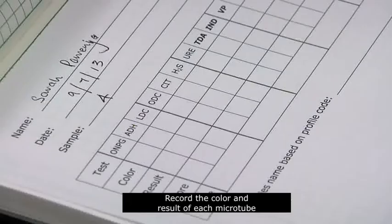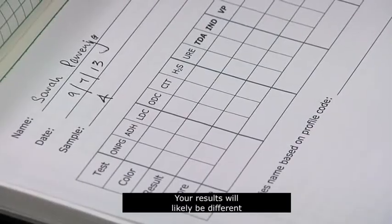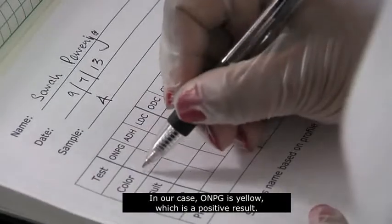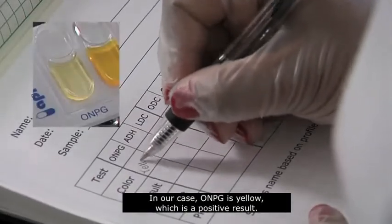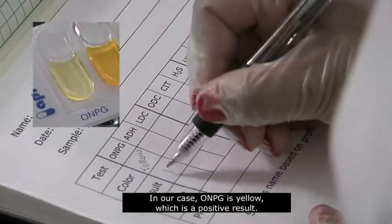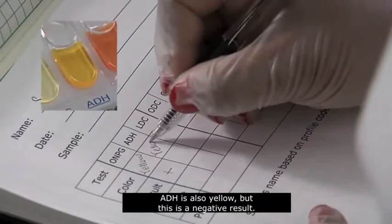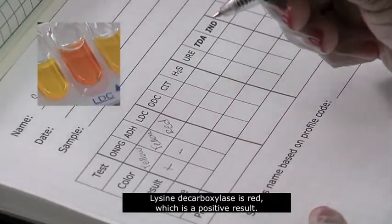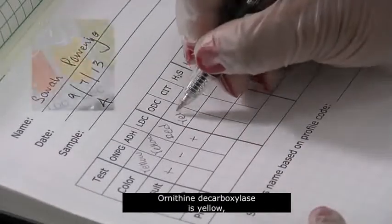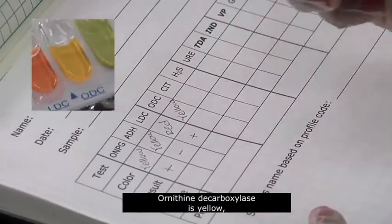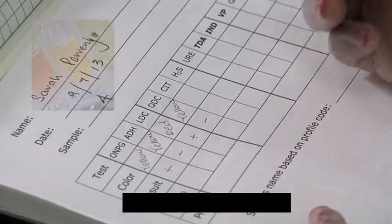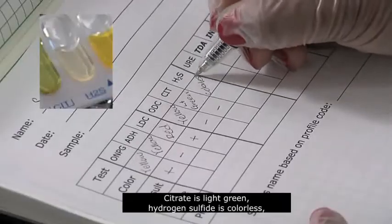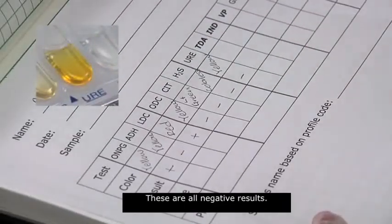Record the color and result of each microtube in your results table. Your results will likely be different from the specific results we show here. In our case, ONPG is yellow, which is a positive result. ADH is also yellow, but this is a negative result. Lysine decarboxylase is red, which is a positive result. Ornithine decarboxylase is yellow, which is a negative result. Citrate is light green, hydrogen sulfide is colorless, and urease is yellow. These are all negative results.